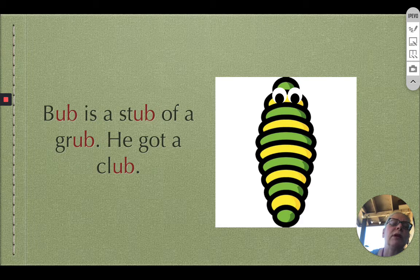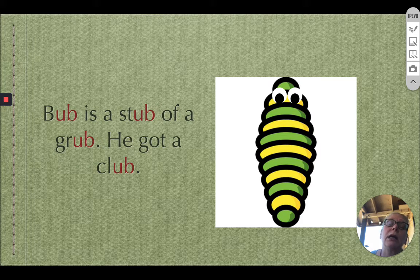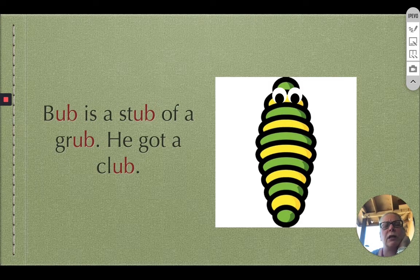Bub is a stub of a grub. He got a club. Oh, somebody hit him too. That wasn't very nice.